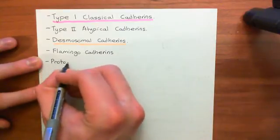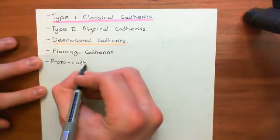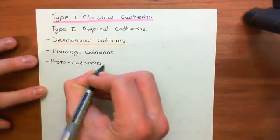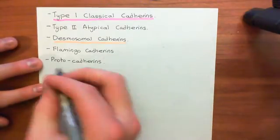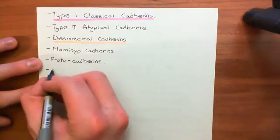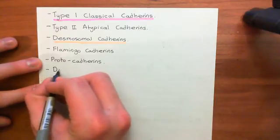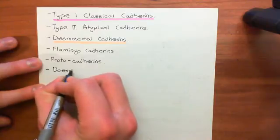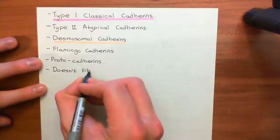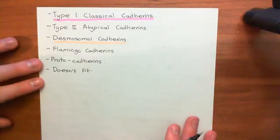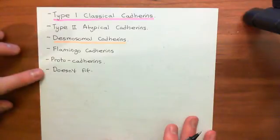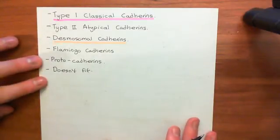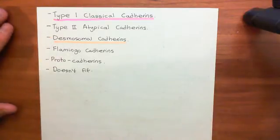Not all catherin family proteins actually fit into one of these families, so some people say there are actually six subfamilies of catherines. The final subfamily is the family which contains everything that doesn't fit — basically the family of everything that doesn't have a family. So some people say six subfamilies: five main ones plus all the ones that don't actually fit into any of those. Those are the five families of catherin proteins.